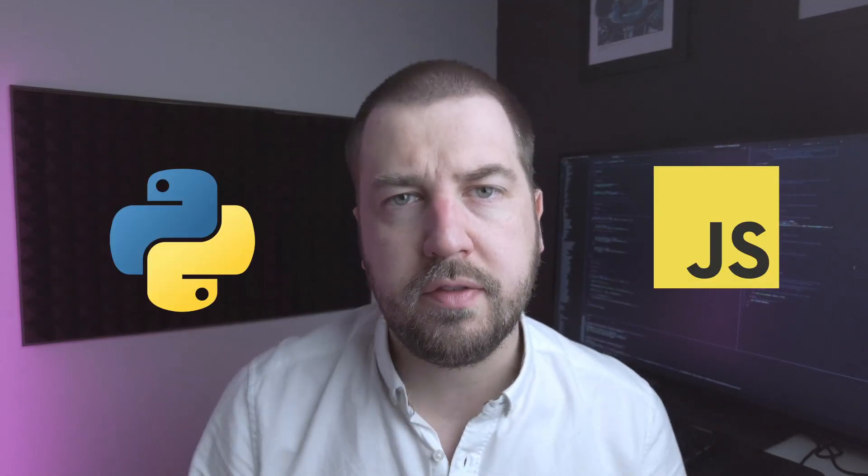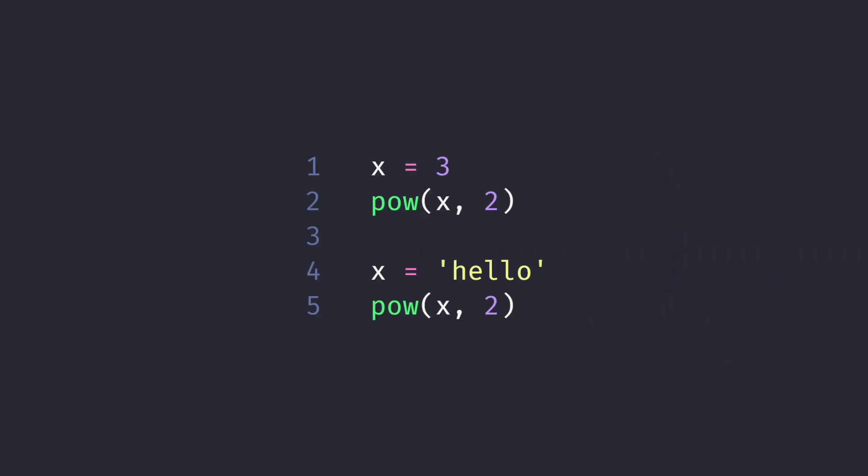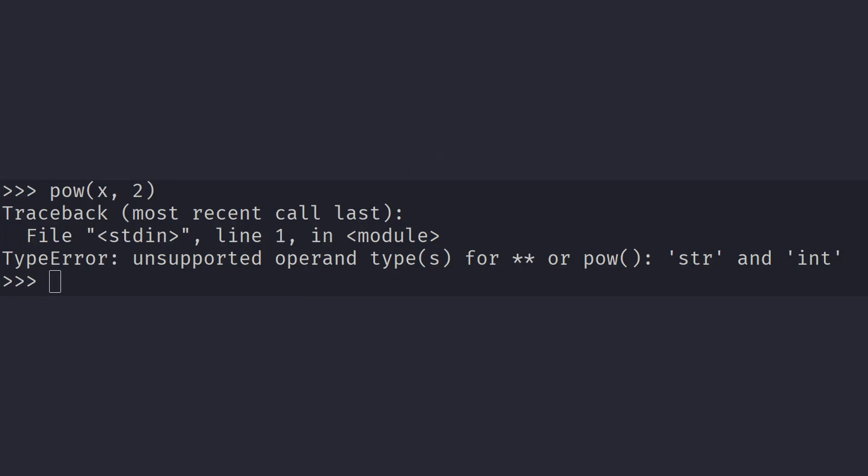There are many ways to categorize programming languages, and one of the most fundamental ways is how they do type checking. If you're coming from a scripting language like Python or JavaScript, then the following code will be familiar. The variable x has no fixed type — it is free to be changed as the programmer sees fit. But if we have a function which expects a variable to be an int but we pass it a string, we will get some sort of runtime error, like an exception. These languages are known as dynamically typed — the checking of whether a type is valid for a given operation is done at runtime.